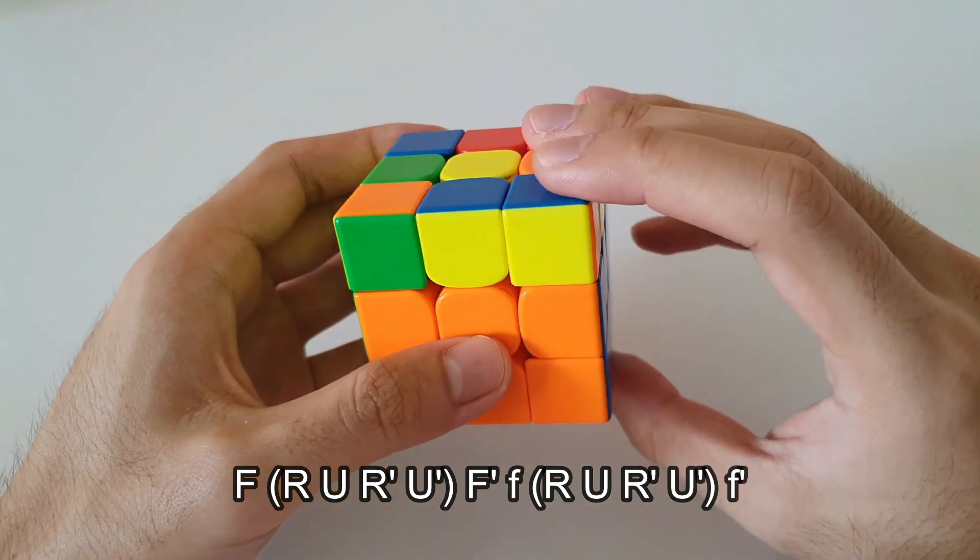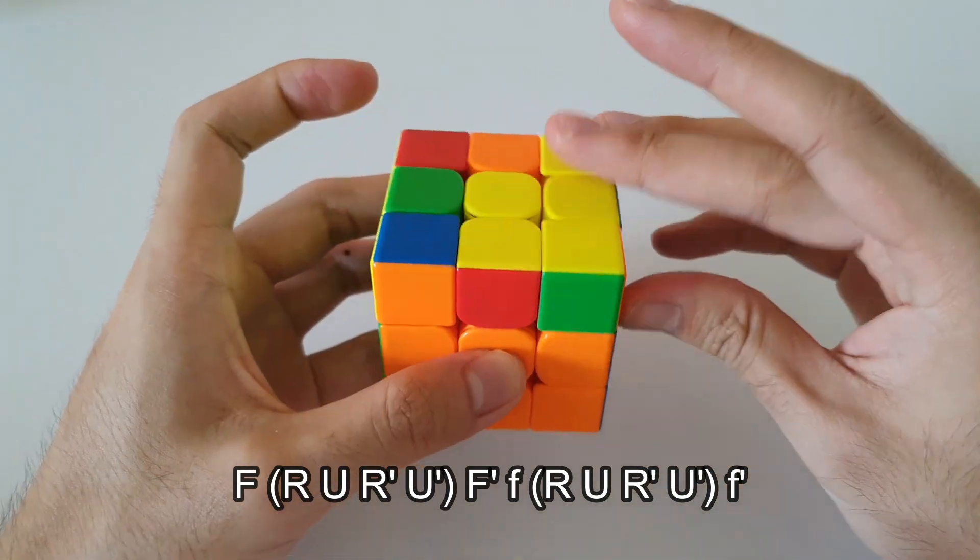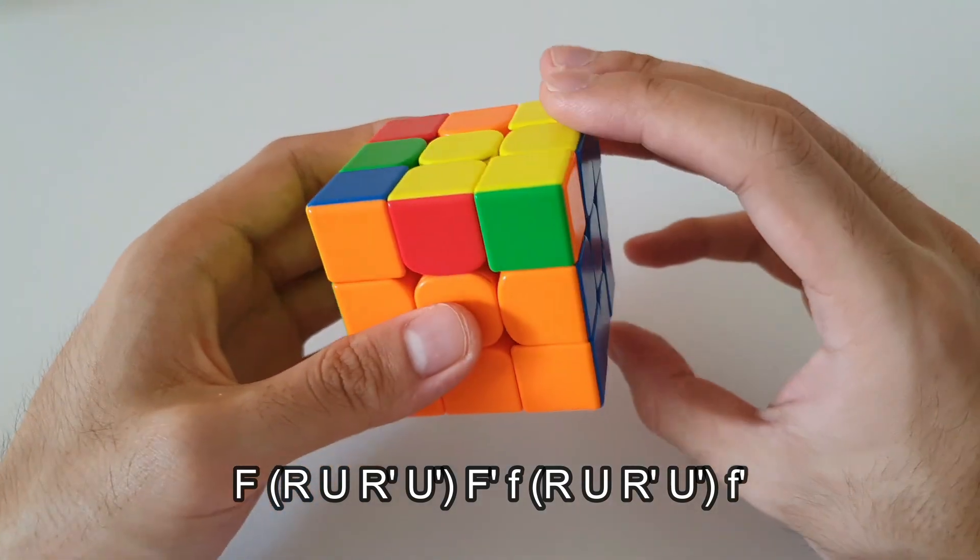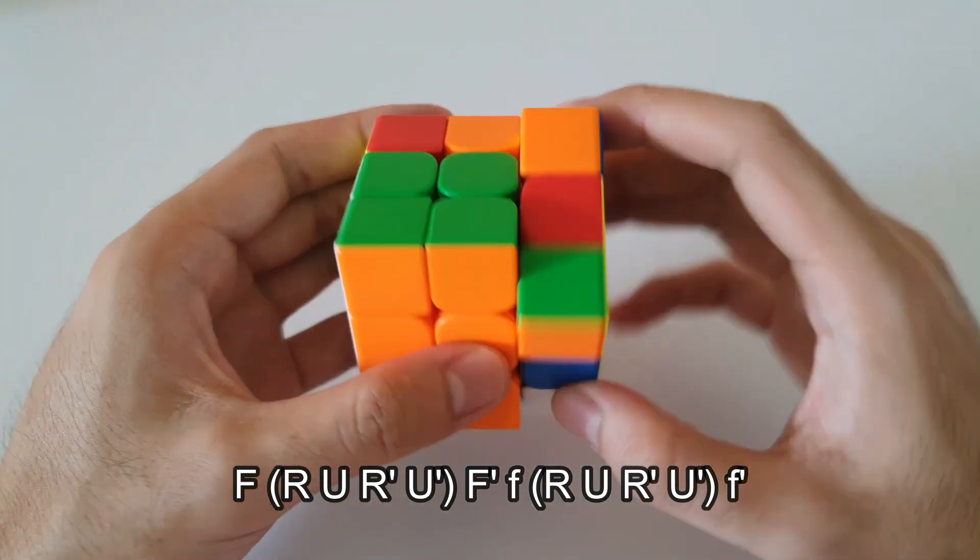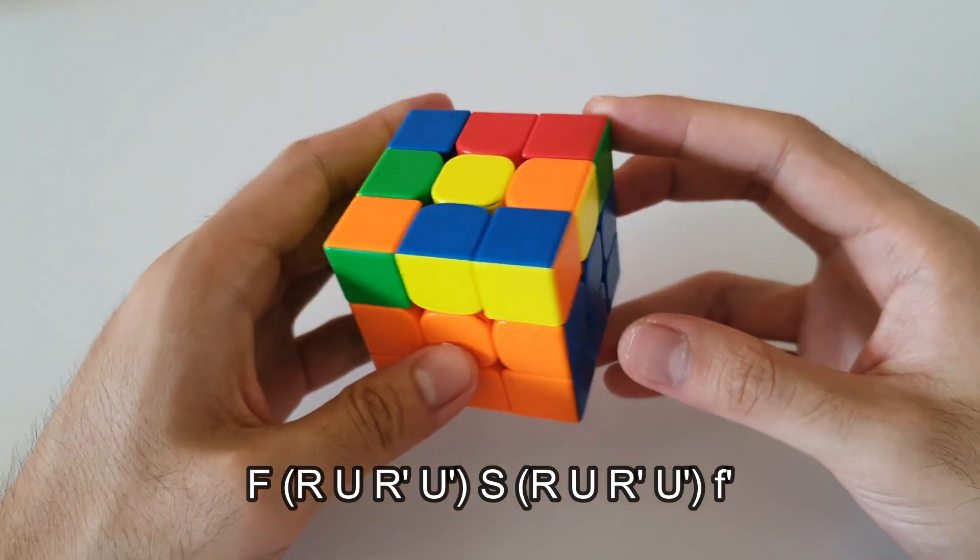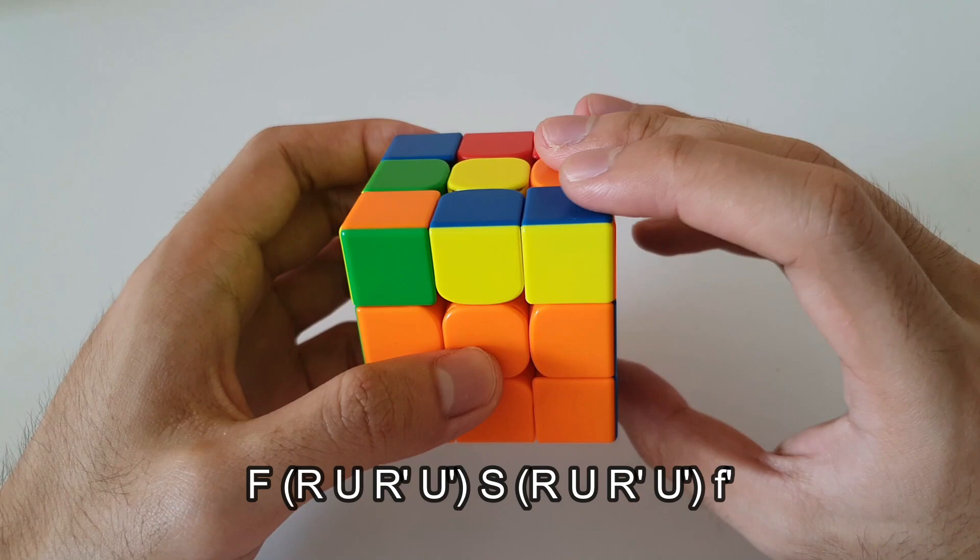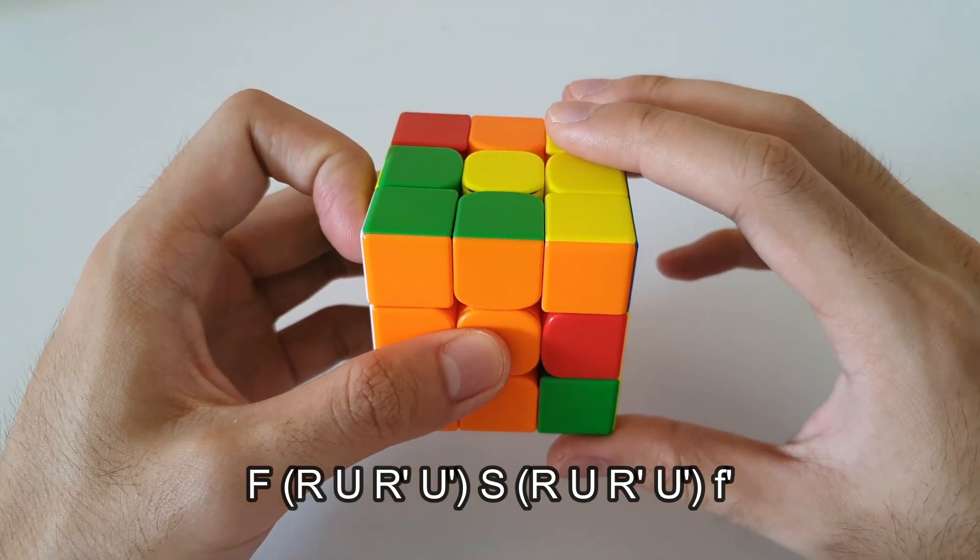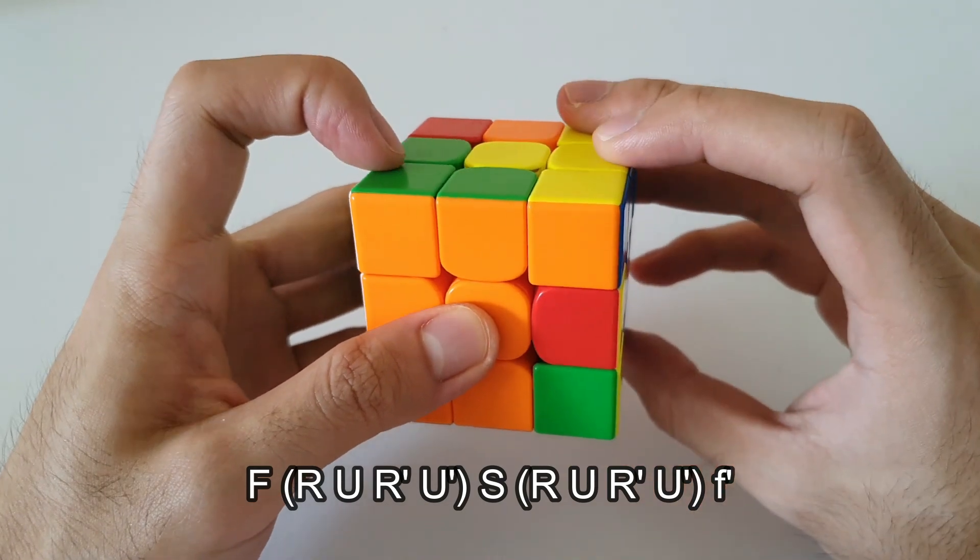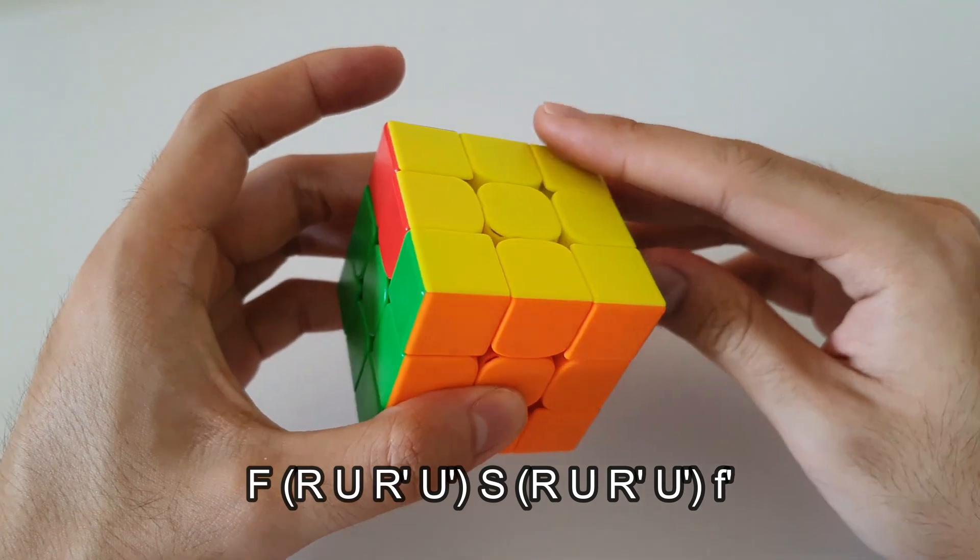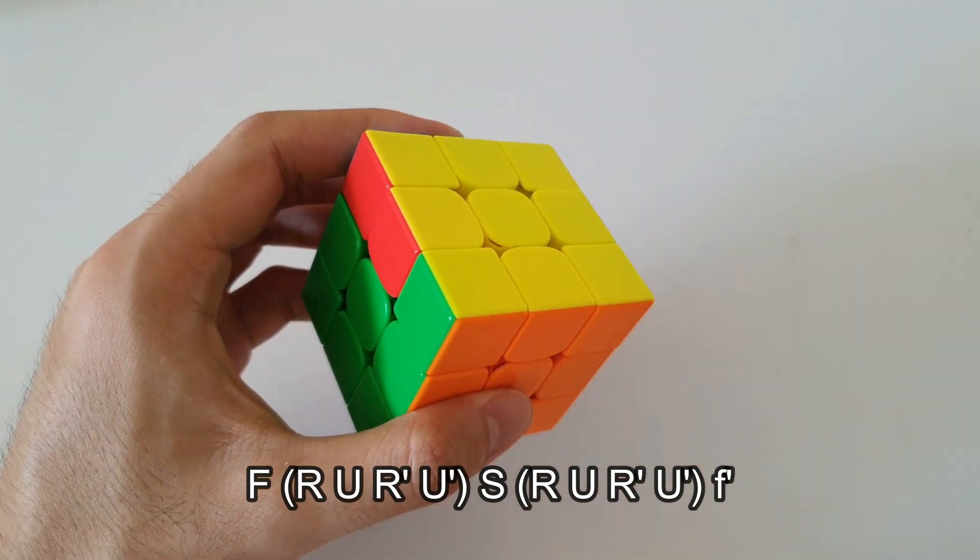So it starts off with an F sexy F' that sets up this P-shaped OLL case which you can solve using wide F sexy wide F'. Alternatively, you can do something fancy as well, so you can start off with an F sexy and here instead of doing the F' followed by a wide F, you can do an S layer move like this and then do another sexy followed by the wide F'. That solves that case as well.